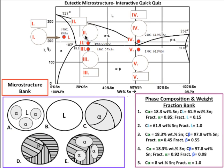It's time for question 3, at the point 190 degrees Celsius and 25% Sn, at Roman numeral 2, or this red dot right there, what is the phase composition and weight fraction? Your answer would go in this box up there, and your choices are 1, 2, 3, 4, and 5.